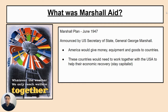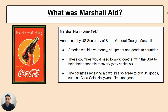These countries would need to work together with the USA to help their economic recovery — basically, stay capitalist and stay an ally of America. The countries receiving the aid, once they had rebuilt and had a strong economy, would agree to buy US goods like Coca-Cola, Hollywood films, and jeans. So America was giving money out but also creating markets for its own goods at the same time — ensuring countries stayed capitalist, providing strong allies, and opening markets for American exports.